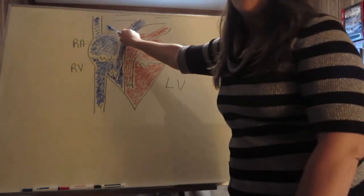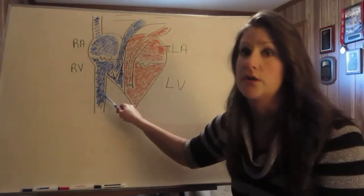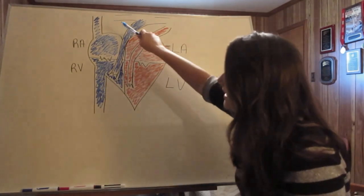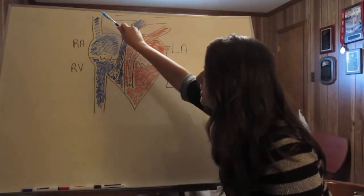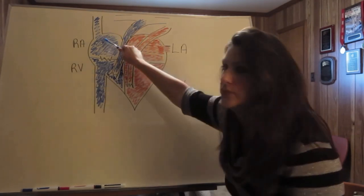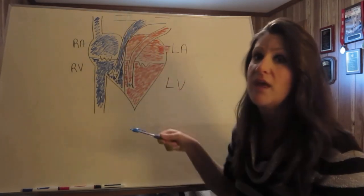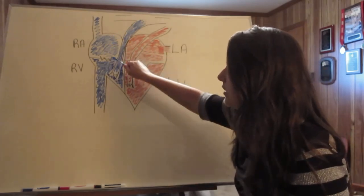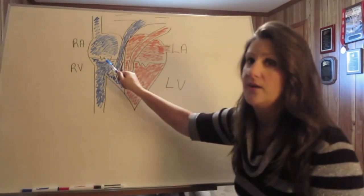Deoxygenated blood returns via the superior and inferior vena cava, emptying into the right atrium. From the right atrium, the blood passes through the tricuspid valve.